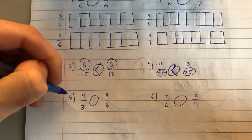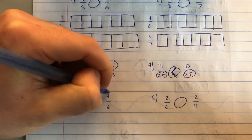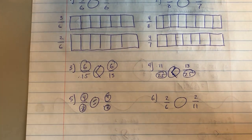Looking at number 5, I see I have 4 eighths and 4 eighths. Both my numerators and my denominators are the same, so these fractions are equal.